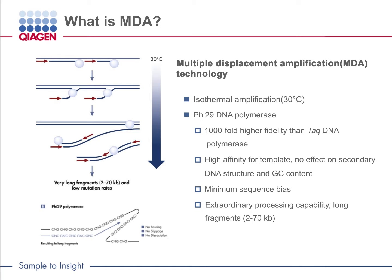This processivity also means there are fewer polymerase binding events and less opportunity for certain templates to become highly overrepresented. The combination of high template affinity and extraordinary processing capability enables it to generate long fragments.